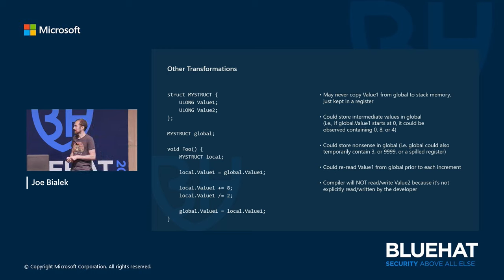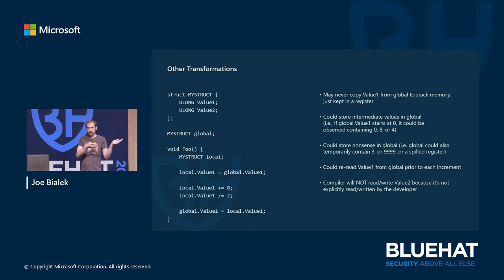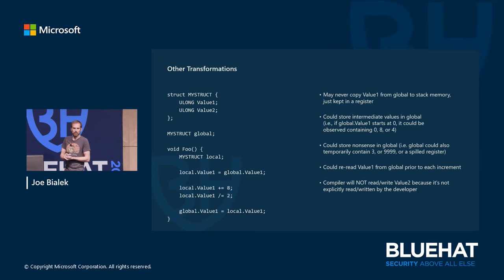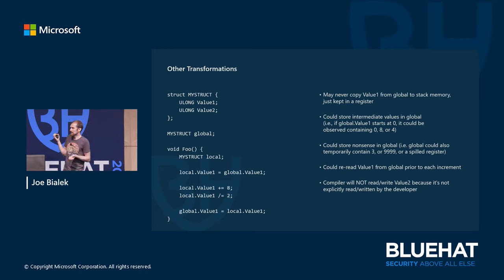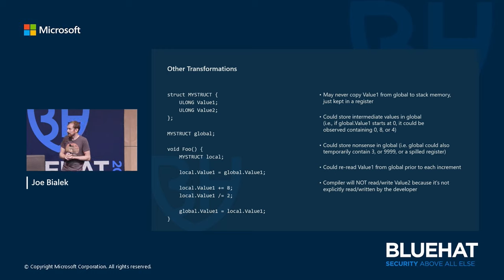Something that takes a lot of people by surprise: the compiler could write complete garbage at that global variable temporarily — it could write three, it could write 9000, it could spill a register into that global variable. You have no guarantee what will be in that global variable at any particular moment in time. This is all legal because it would be correct under single-threaded operation. Also, the compiler is not guaranteed to only perform the memory accesses you specify — even though the source shows one load, the compiler could generate multiple loads from that global variable.